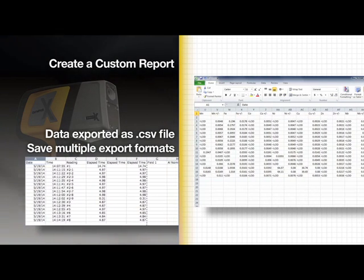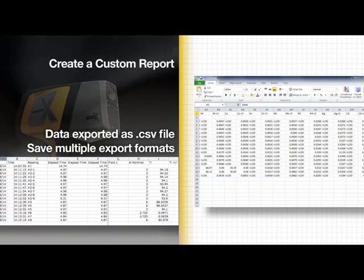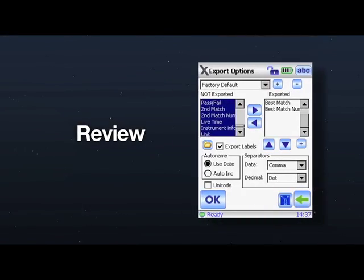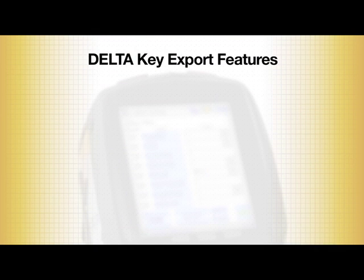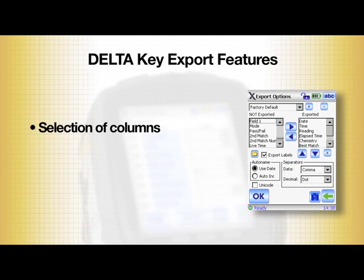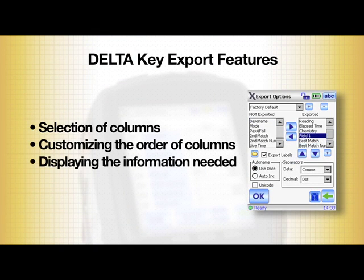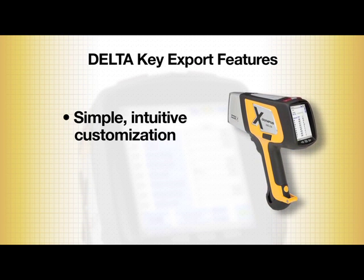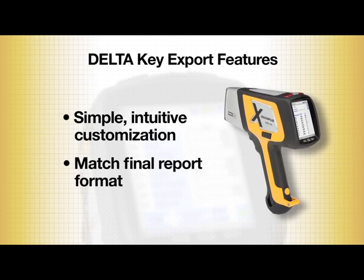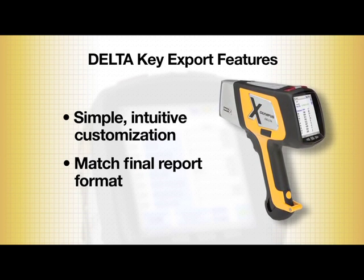You can save multiple export formats to review test results. To review, the key export features are selection of columns, customizing the order of columns, and displaying the information needed. Through simple, intuitive customization, you can make your export results match your final report format.